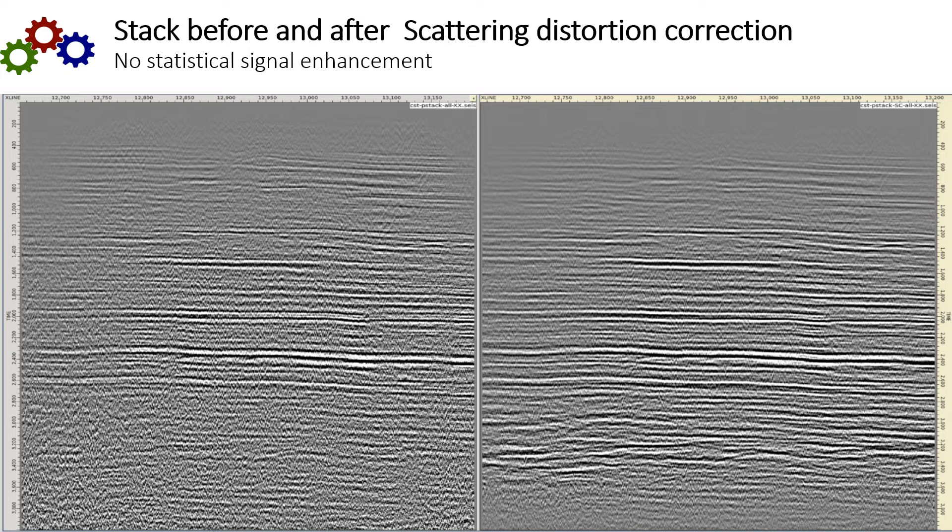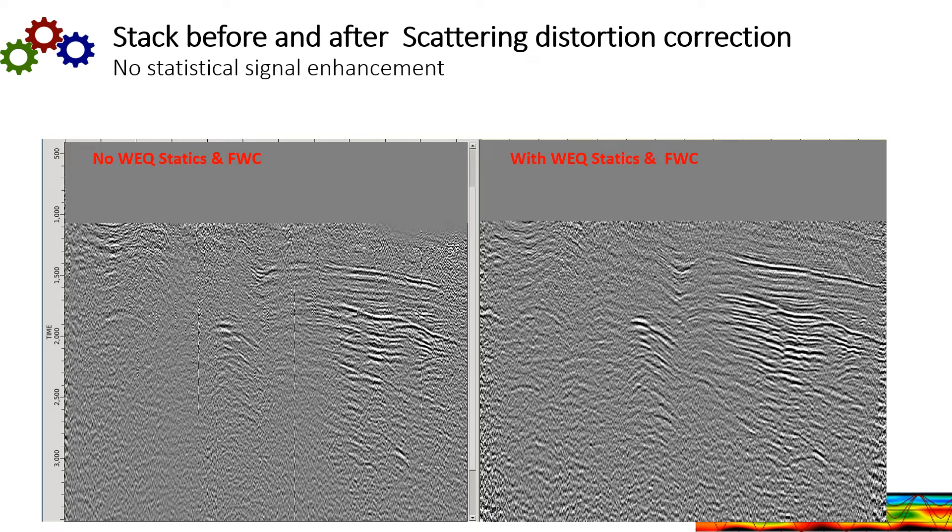Here's the result of the stack before and after the scattering distortion correction. On the left is without and on the right is with the scattering correction. And if you especially look in the deeper part of the section where you have very poor signal to noise quality, you can see actually the most improvement. A lot of subtle features that exist here you can see are better resolved after the scattering distortion.